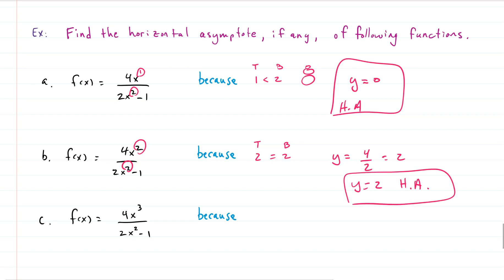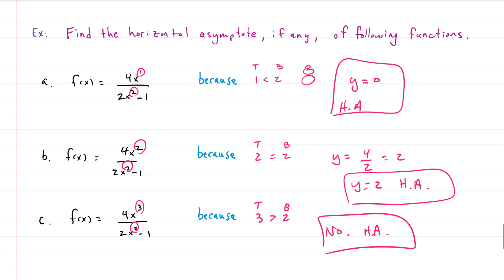The third function is 4x cubed over (2x squared minus 1). The biggest exponent on top is 3, on the bottom is 2 — top is bigger than bottom — so there is no horizontal asymptote. And that's it! Hopefully this was helpful. Hope you never forget the snowman rule. If you enjoyed this, please subscribe to the channel, and thanks for watching.